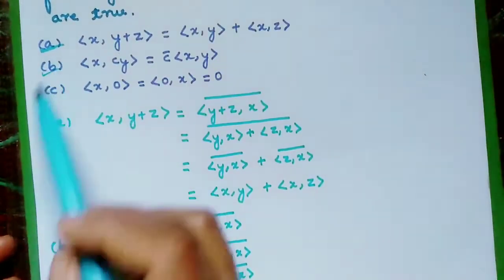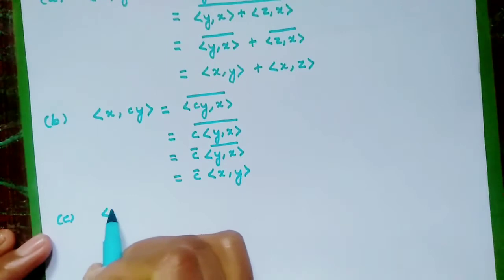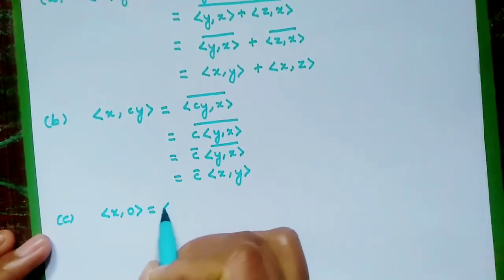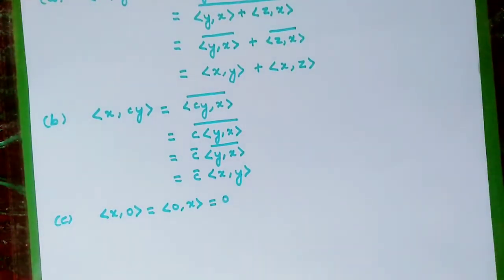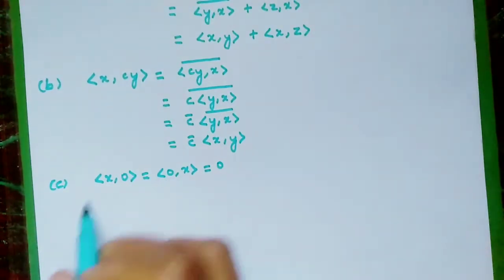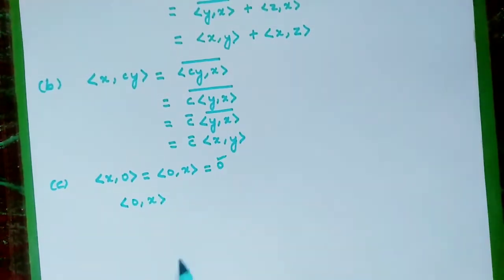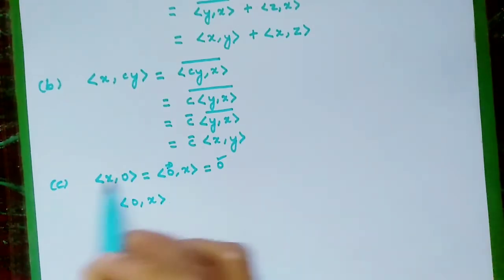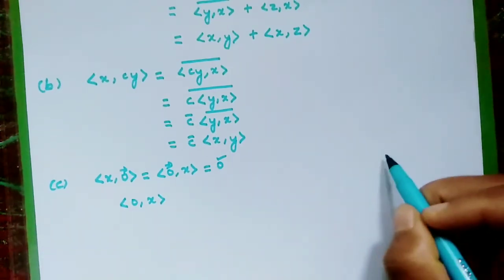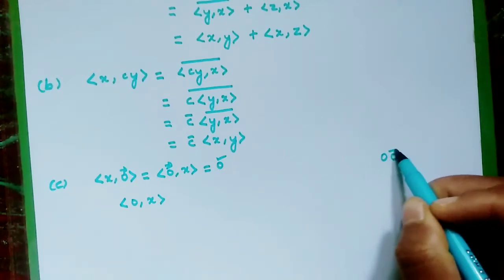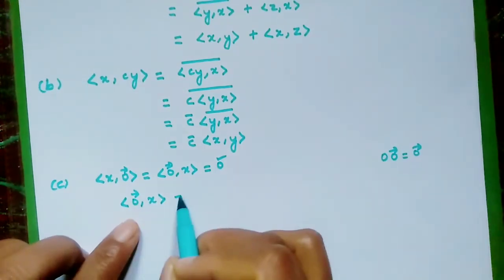Now let us come to the third one. We have to show that ⟨x, 0⟩ = ⟨0, x⟩ = 0. Let us choose ⟨0, x⟩. Here 0 is a scalar and x is a vector. A scalar multiplied with a vector gives a vector, so we can write the zero vector as 0 times the zero vector.